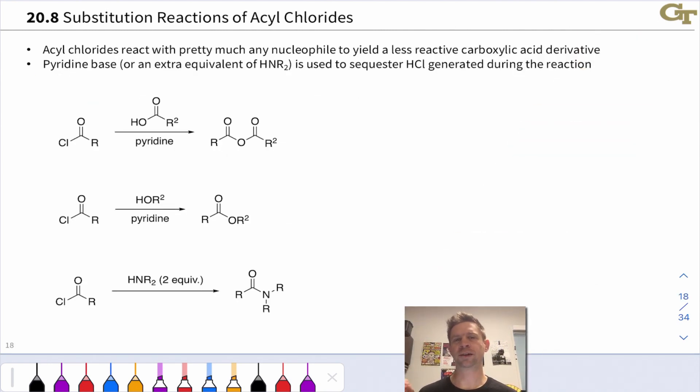Acyl chlorides are so electrophilic that they can react readily with almost any nucleophile you can think of. Any even remotely reactive nucleophile even something as weak as water can react readily with an acyl chloride. Often when we deliberately want to react a nucleophile with an acyl chloride to get some other carboxylic acid derivative we add in a base to mop up the hydrochloric acid that's going to be generated in this reaction and quite often the base of choice is pyridine.